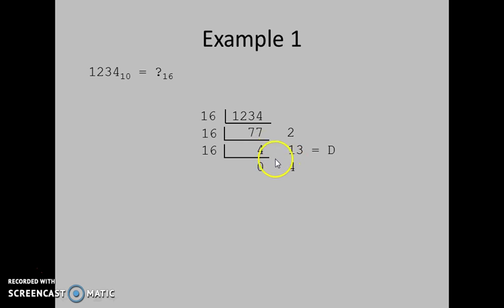When we get division equal to 0, we stop this process. Now, one more thing. In hexadecimal number system, 13 is equivalent to the letter D, capital D. That's why our answer will be 4D2.